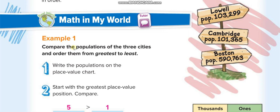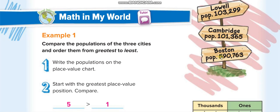Example one: compare the populations of three cities and order them from greatest to least. The three cities are Lowell, Cambridge, and Boston. We have to find the greatest one first, so we check the greatest place value. Here we have hundred thousands: one hundred thousand, one hundred thousand, and five hundred thousand — so the five hundred thousand is the greatest one.